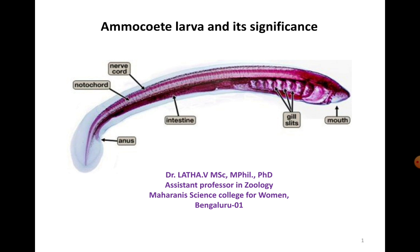Once the eggs are laid, they are telolecithal types having a good amount of yolk. Cleavage is holoblastic and unequal. Gastrulation takes place by the process of invagination, then blastopore formation occurs which gets converted into the anus. Development of the nervous system in this Ammocoetes larva is very unique — it develops in the form of a solid cord or keel, then forms a hollow cavity inside. This type of CNS formation is called the thickened keel method, and is one unique feature of Ammocoetes larvae.